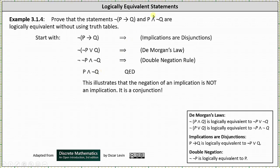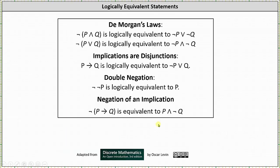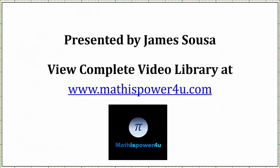The two statements are equivalent. This illustrates that the negation of an implication is not an implication — it is a conjunction. We can verify the result using a truth table: the columns for the negation of (if p then q) and p and not q are identical. To summarize, we have discussed De Morgan's laws, implication as disjunction, double negation, and the negation of an implication. I hope you found this helpful. Thank you.